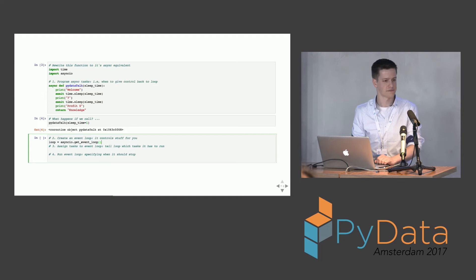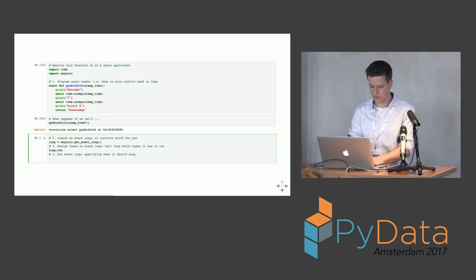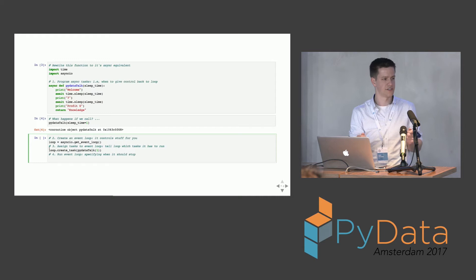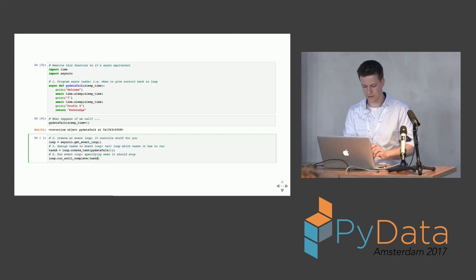We'll need asyncio and can get the event loop using asyncio.get_event_loop(). This creates a loop object. We assign tasks using create_task — for instance, create a task for the PyData talk function with a sleep of one second. The create_task call returns a task object you can later use to check if the task is completed. Then we finally have to run the loop. One way is run_until_complete — we can say run this until task A completes.